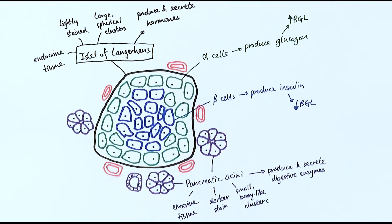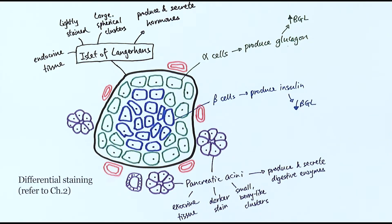Looking at microscopic images, you will be able to see the different colors or different levels of staining — this is called differential staining, which you may remember from Chapter 2 in AS. Differential staining is the technique where different cells are stained using different stains, because those stains have a specific structure that can bind to specific receptors on the cell surface or even the chemicals they produce. For example, one stain can bind to insulin produced in beta cells, helping us see the beta cells, because only beta cells have insulin in them. Other cells don't, so they present a slightly different color or shade.